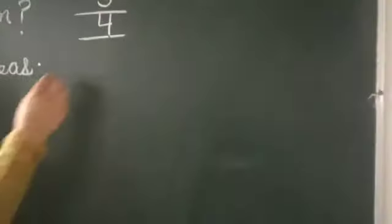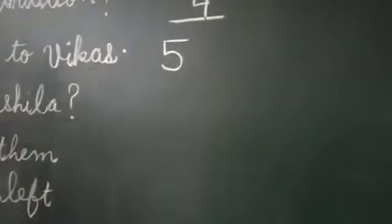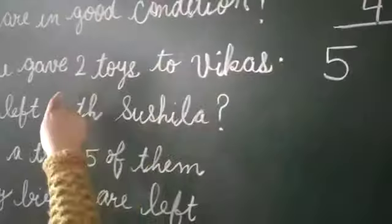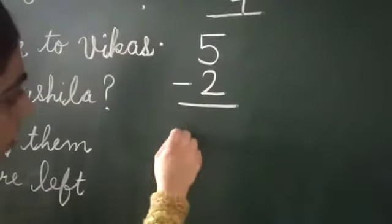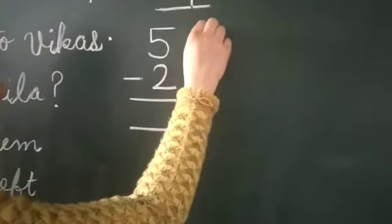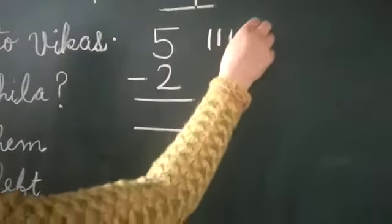So here we write 5 and two toys gave to Vikas. Here we write 2. After subtraction, here we draw the five lines: one, two, three, four, five.